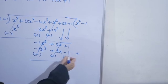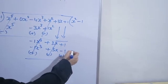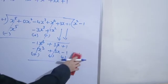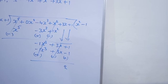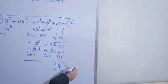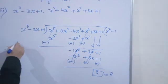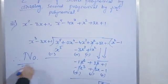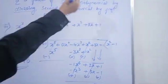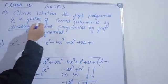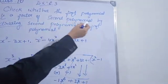Yahaan pe plus 1, neeche wala bhi plus 1 hai, to 2 aayega — remainder 0 nahi aayega. Remainder 0 nahi hai, therefore it is not a factor. First polynomial is not a factor of second polynomial.